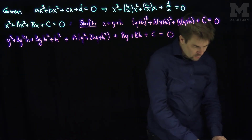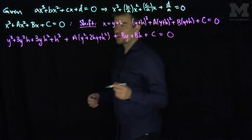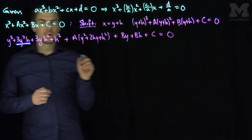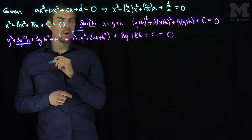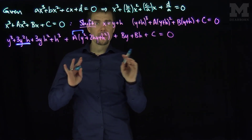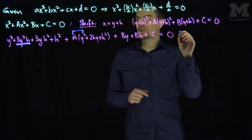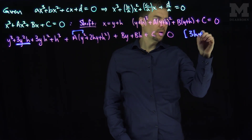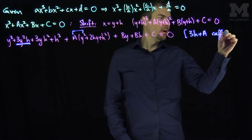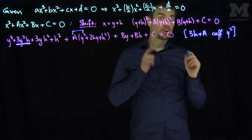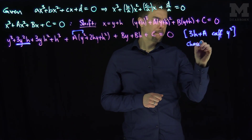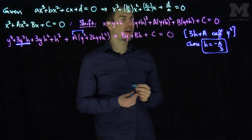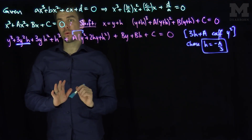You might say, why did you shift the equation? I shifted the equation so that I can choose a value of h. If I look at the term 3y²h and the term Ay², those are the only y² terms. So the coefficient of y² is 3h + A. I'm going to choose h = -A/3.